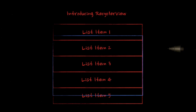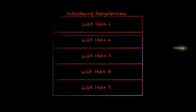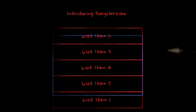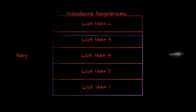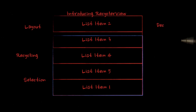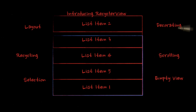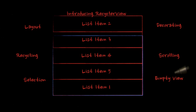RecyclerView was added to the support library to ultimately perform many of the same functions that ListView does. The addition of material design list item animations necessitated a significant change in the way adapters worked. The ListView code was already exceptionally complicated — a relatively monolithic code base handled layout, recycling, selection, UI decorations like dividers, scrolling, and empty view. The decision was made to start over and produce a more flexible control.